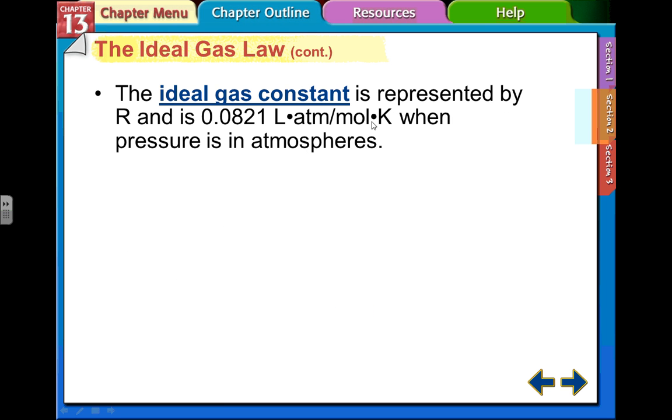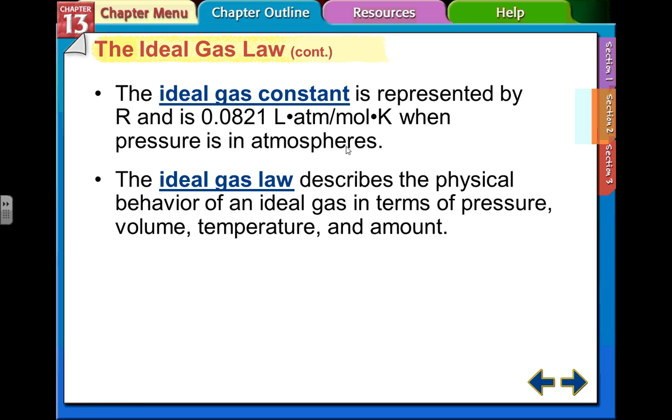Okay, so the ideal gas constant, the one we use the most often, is with atmospheres, and it's 0.0821. That's kind of a rounded number. And the ideal gas law describes the physical behavior of an ideal gas in terms of pressure, volume, temperature, and amount. Well, of course, there's really no such thing as an ideal gas, but most of the gases we have, they behave like an ideal gas at normal temperatures and pressures that we deal with them. So they behave enough like an ideal gas that we can use this to work with.